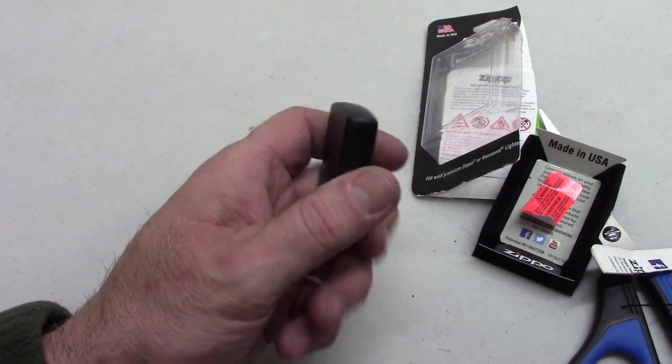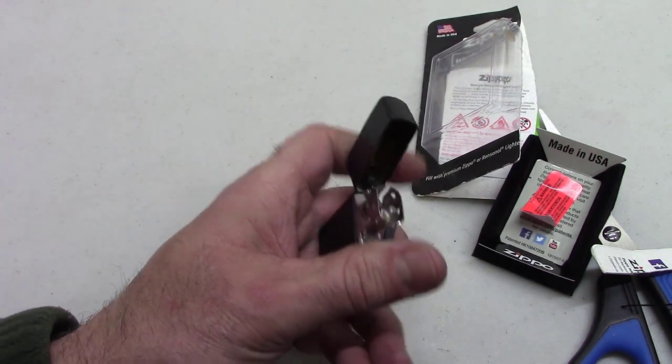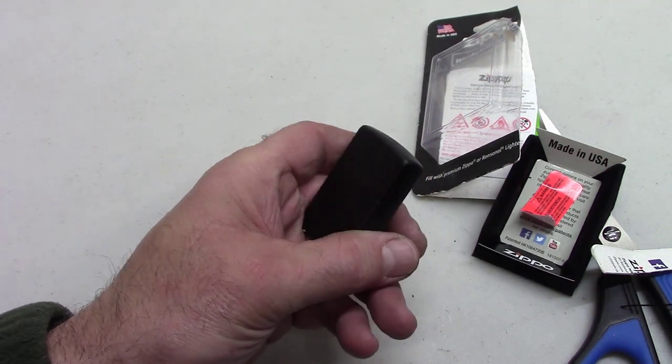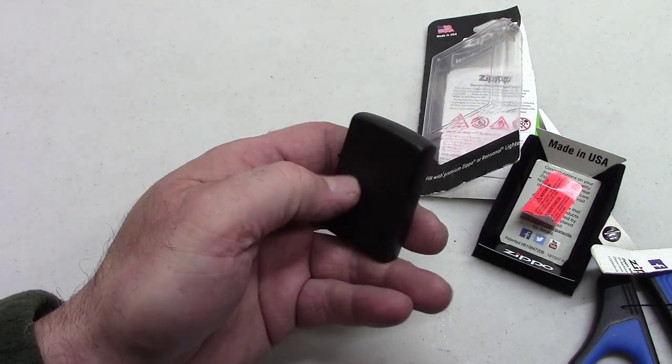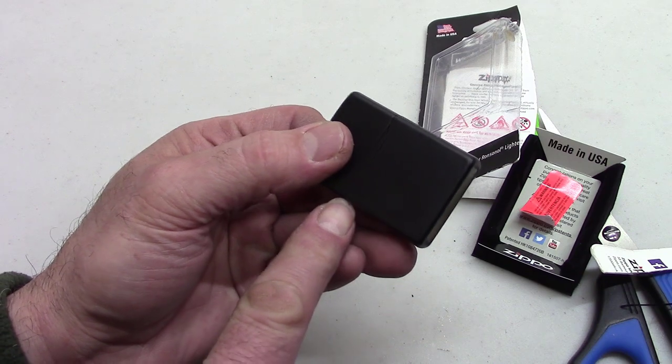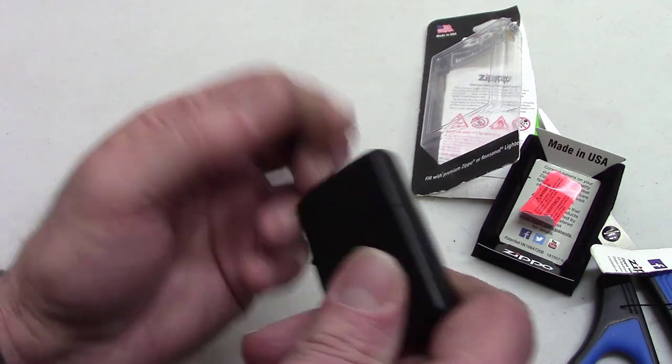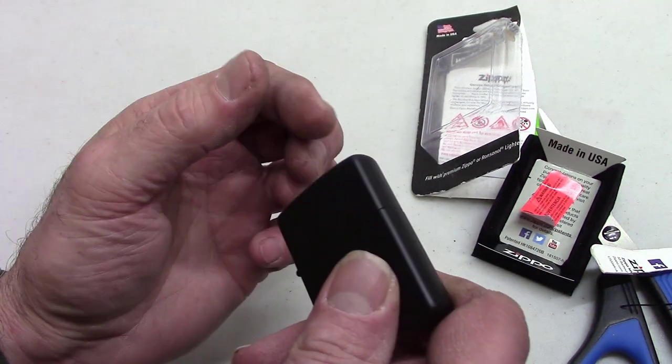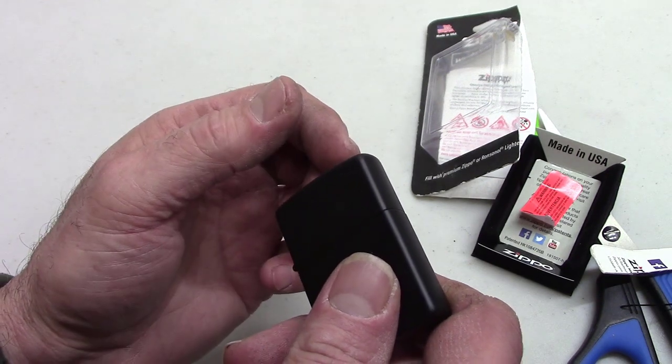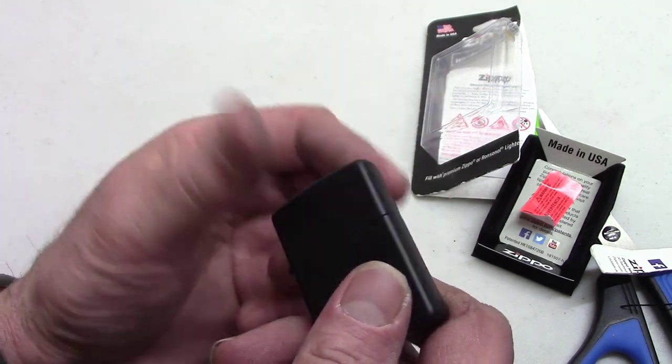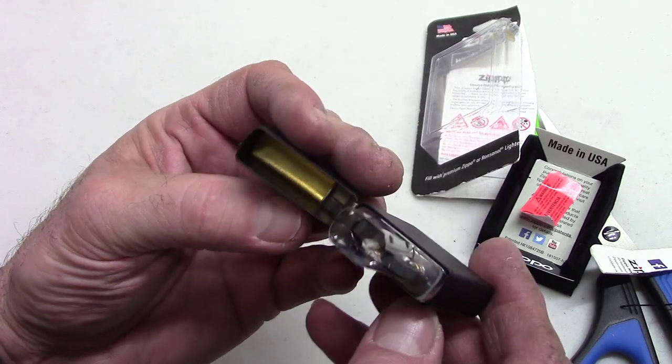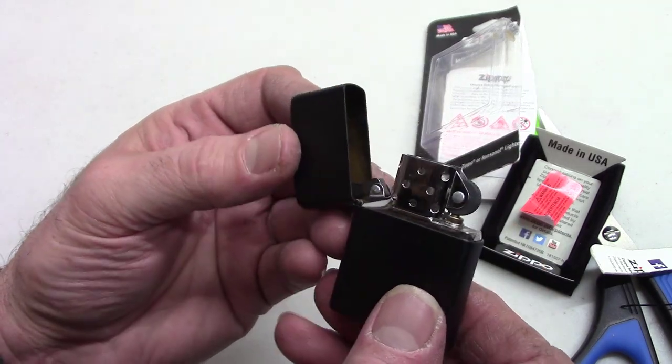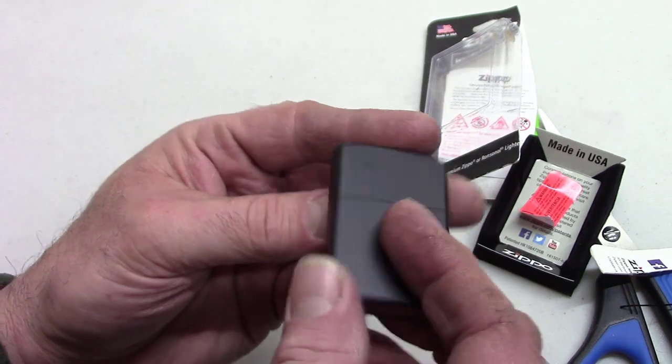But don't do the tricks with them, because you do it one time and you bend this mechanism out, and then the lid won't stay tight and then the fluid dries up. So maybe do the tricks with the older lighter that you have, don't do it with your new ones.